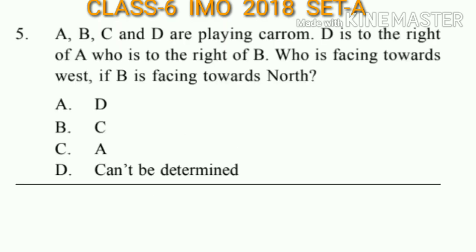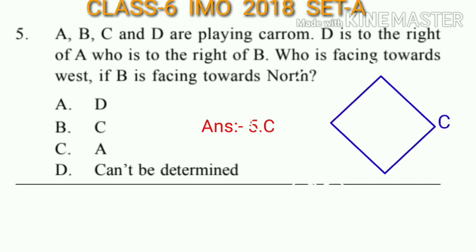Question number 5: A, B, C, and D are playing carom. D is to the right of A, who is to the right of B, who is facing towards west if B is facing towards north. Looking at the figure drawn, A is facing towards west, which is option C.